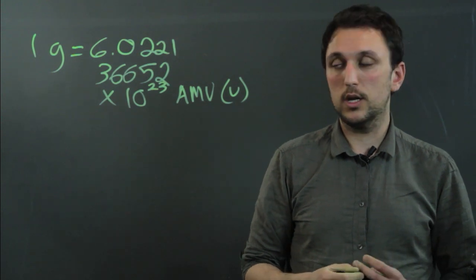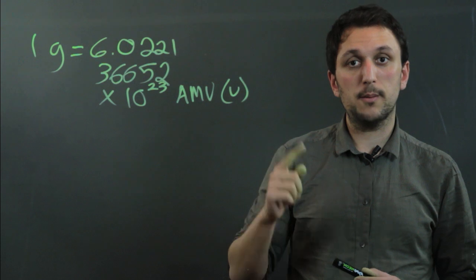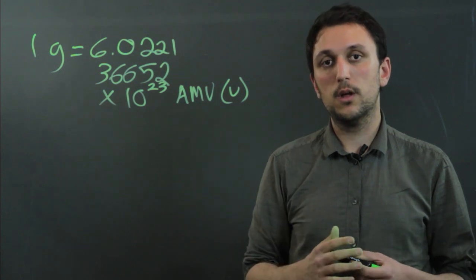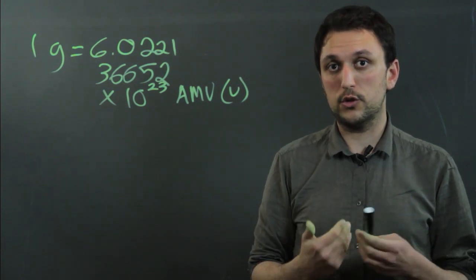Now, an AMU is an atomic mass unit, and one atomic mass unit is roughly the weight of one neutron or one proton inside of an atom. And again, that's rough. It's an approximation. It's not exact.